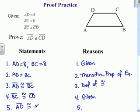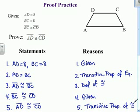So AD is congruent to CD. And once again we use the transitive property. Only this time you'll notice it's not of equality. It's the transitive property of congruence. Hope you got that one.